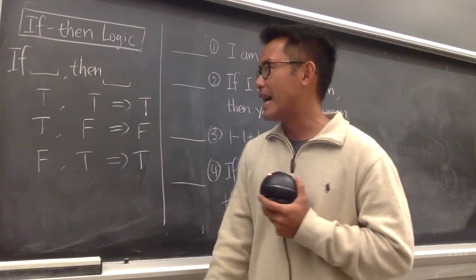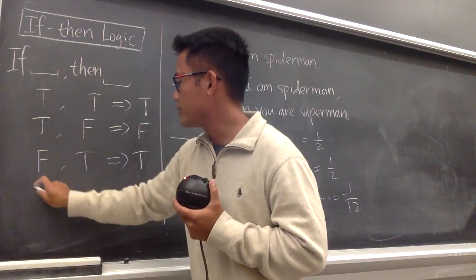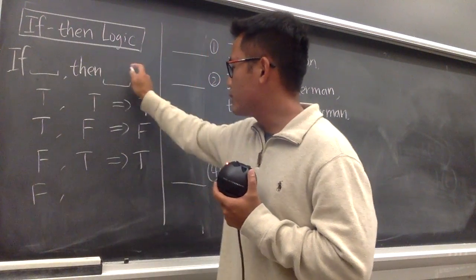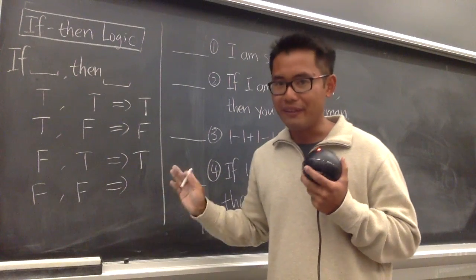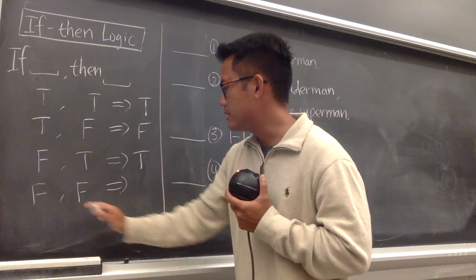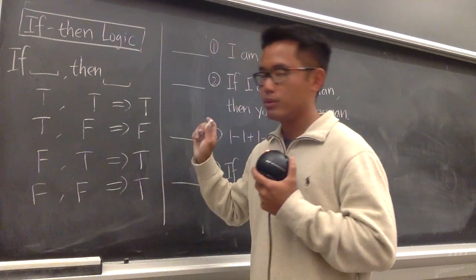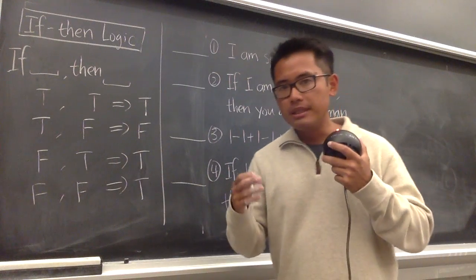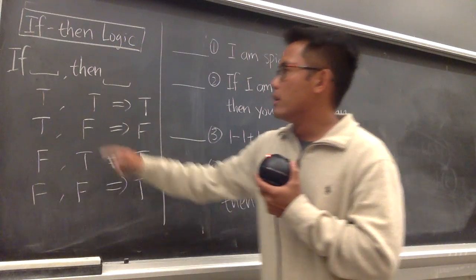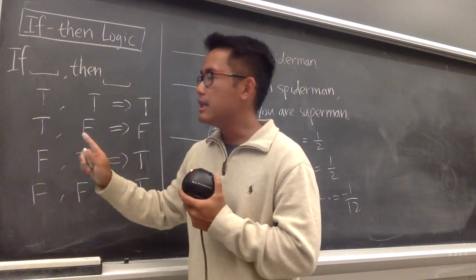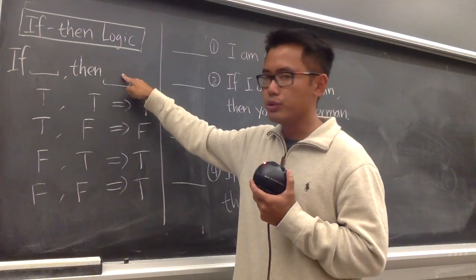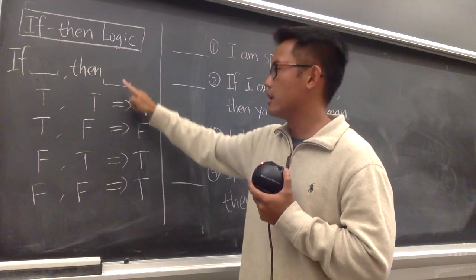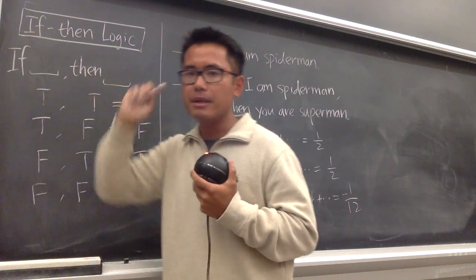And the last thing is that if something that's false right here, then I want to conclude something that's also false. Overall, in fact, this if-then statement in this situation is also true. So to make this simple, the only way for an if-then statement to be false is that when you have a true condition but a false conclusion, that's the only way to get a false if-then statement.